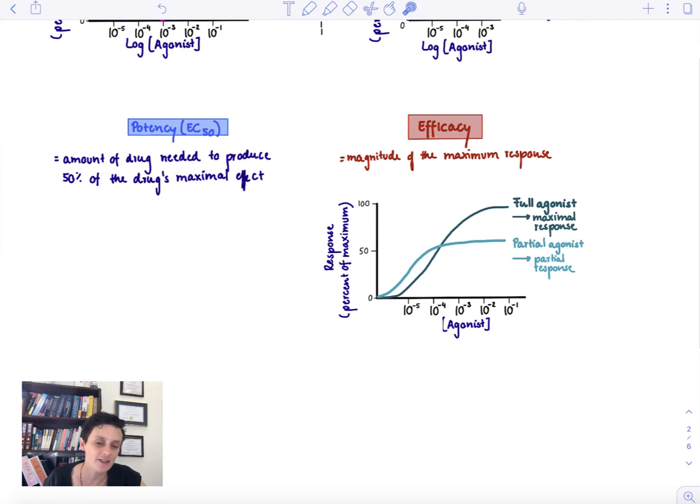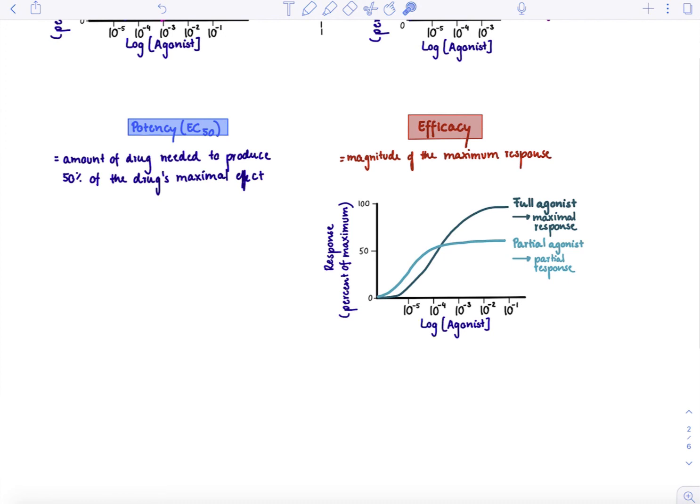And by definition we also know that a partial agonist has always a lower efficacy than a full agonist. This concludes the video on potency and efficacy.